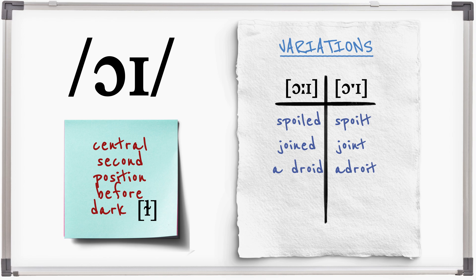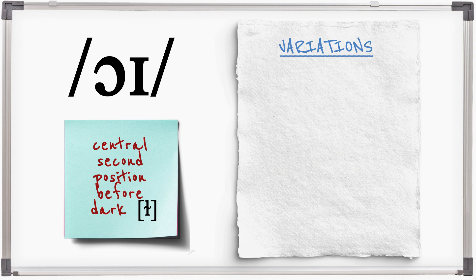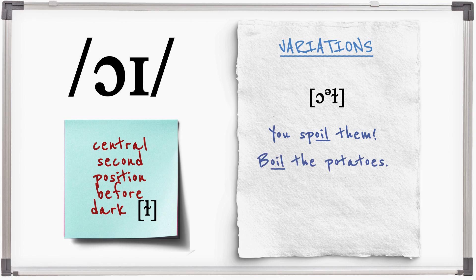In fast speech the second element can be more central when dark L follows it: you spoil them, boil the potatoes.